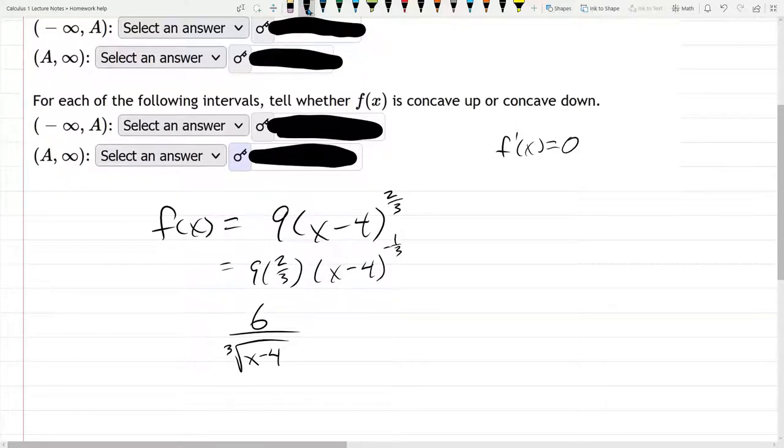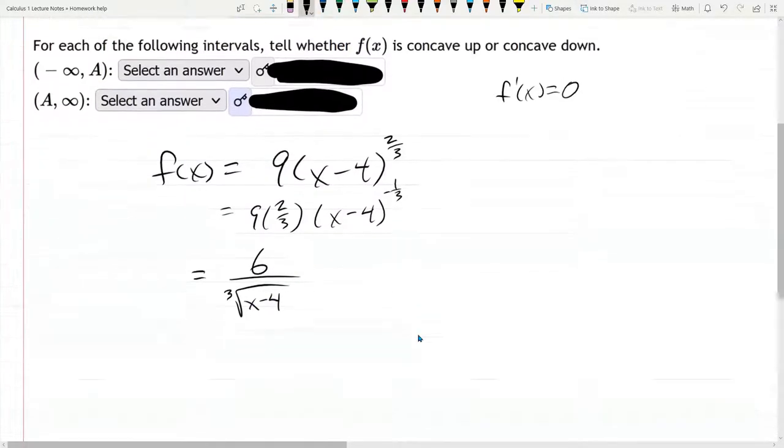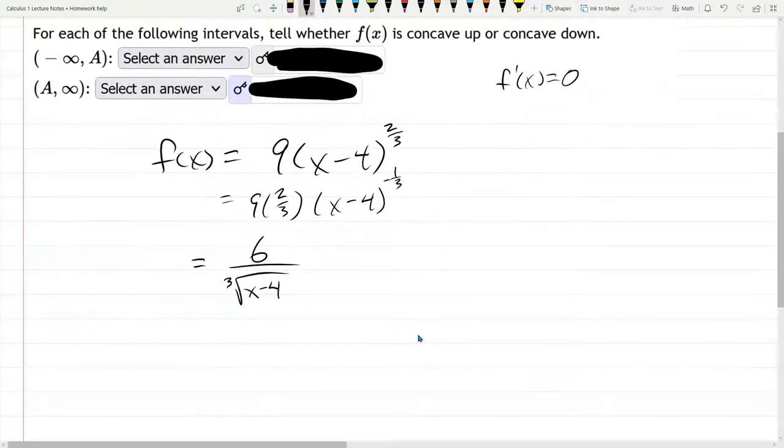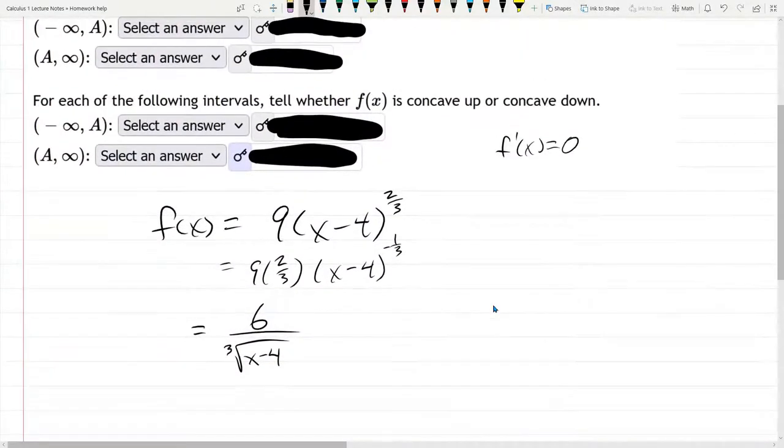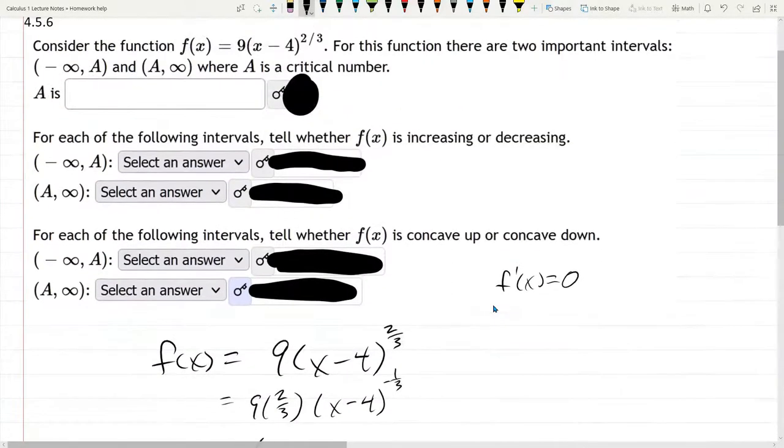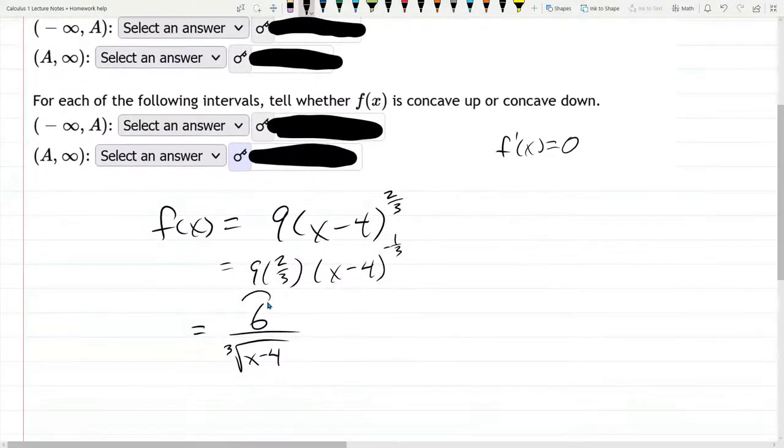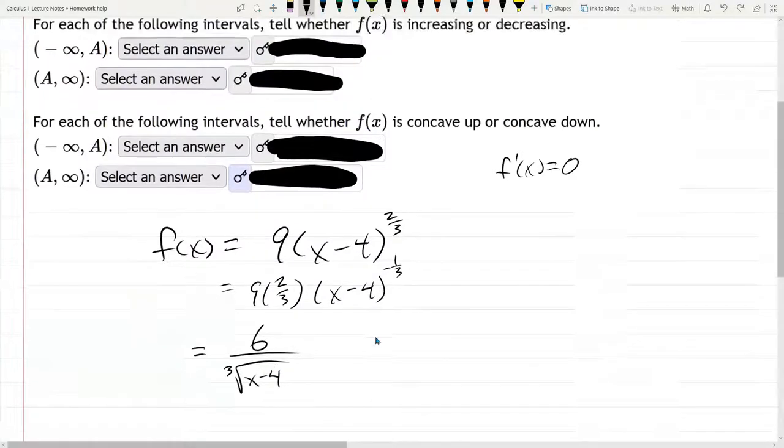Alright once you have this, you know the a value. This is never going to equal 0. So, I wouldn't normally call this a critical number, it is an important number, but the critical number is where the slope is 0. Our slope won't be 0 because the fraction is only 0 when the numerator is 0. That being said, 4 is going to be what they're looking for in the first part.